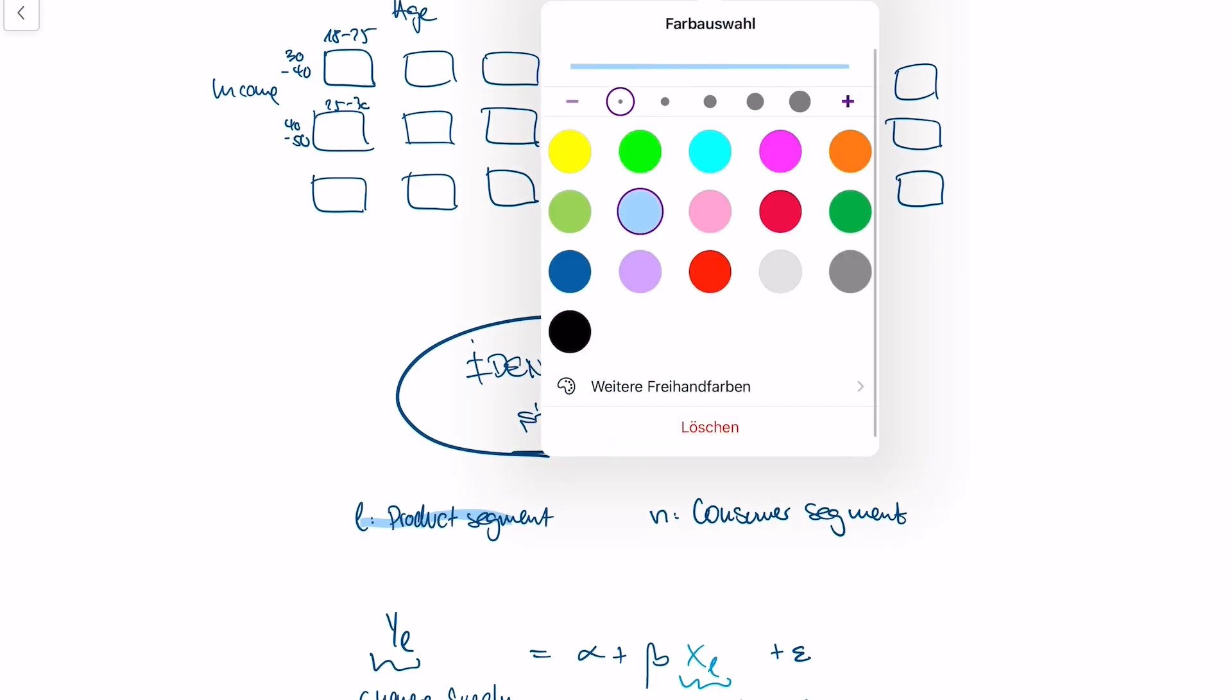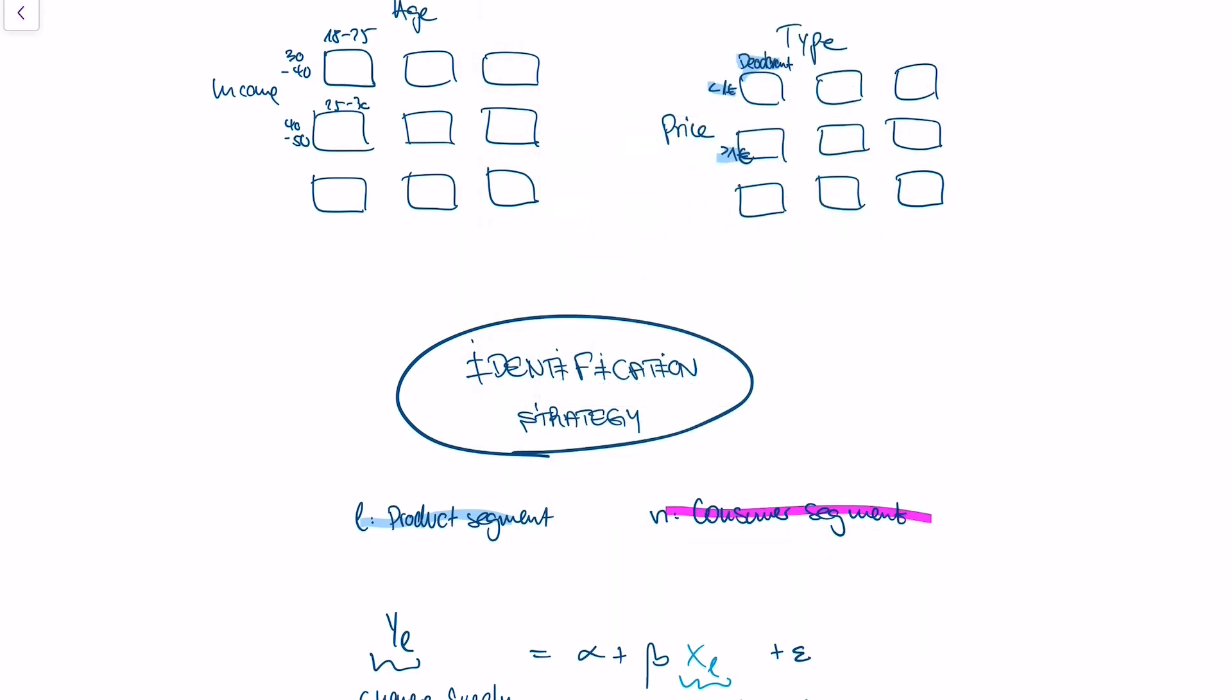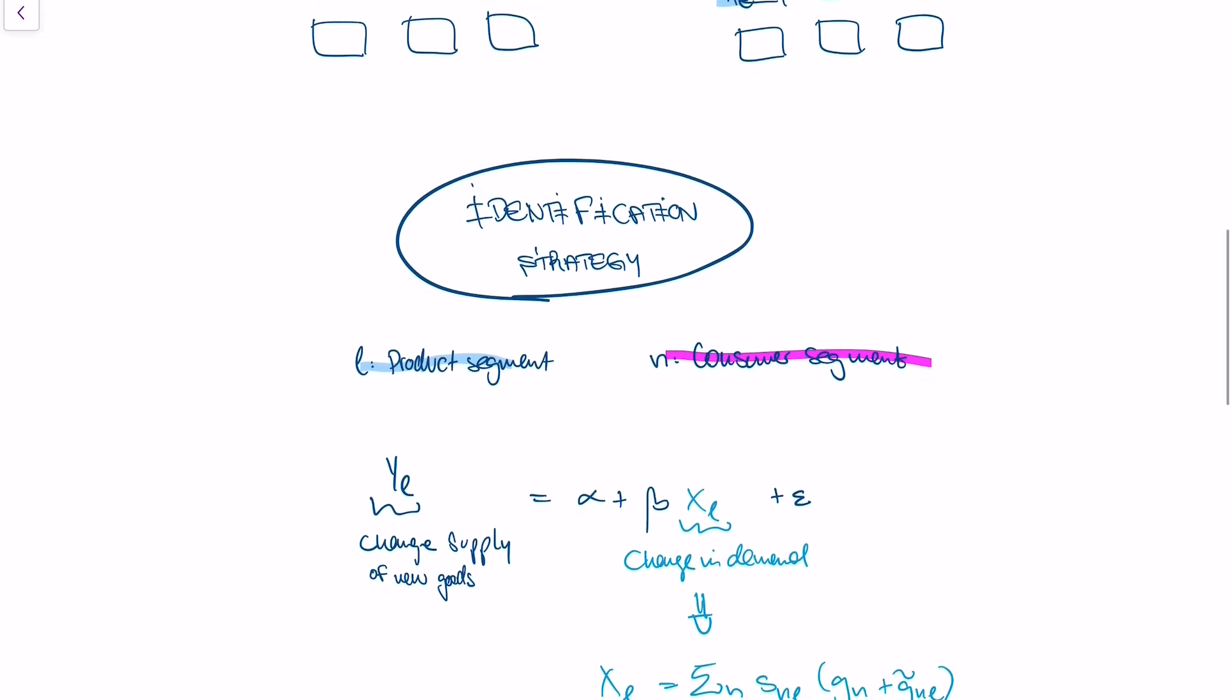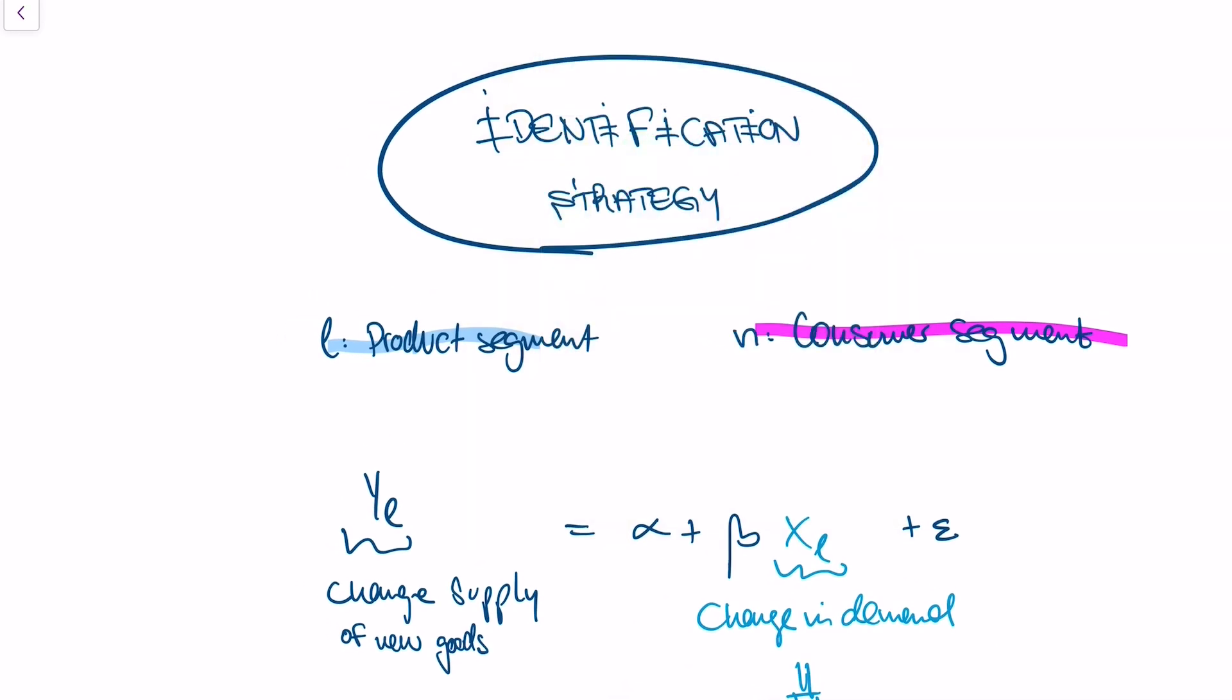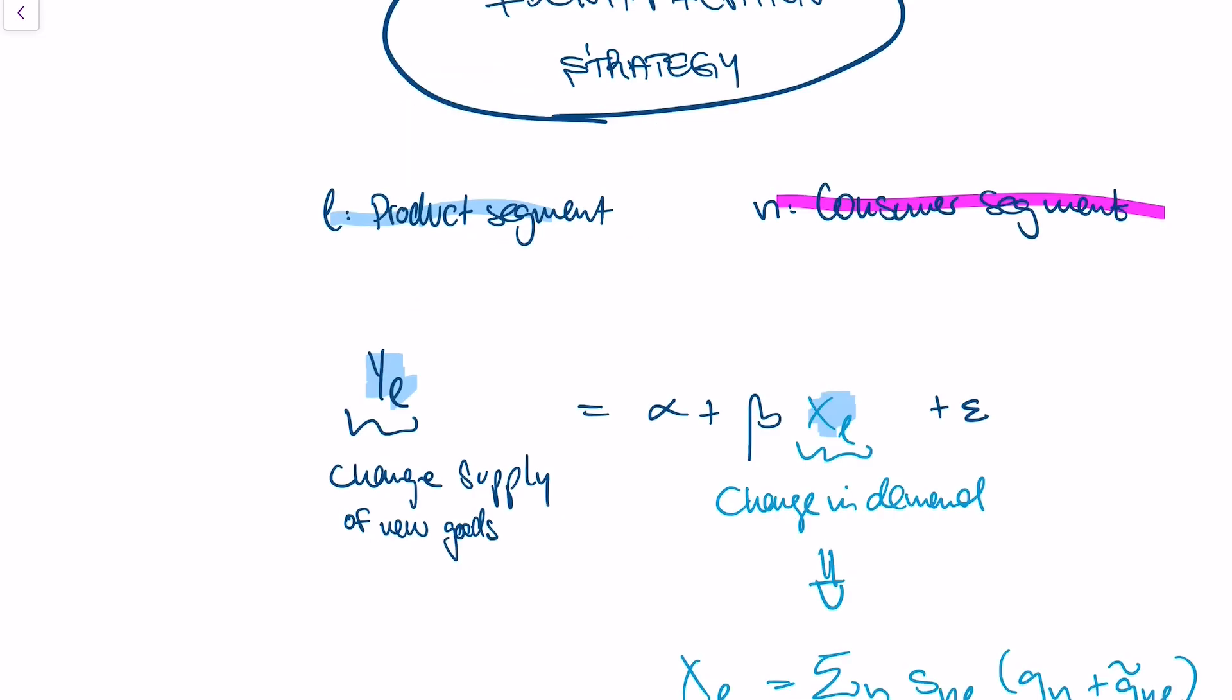And we have different consumer segments - our rich consumers in the age bracket of 25 to 30 and our poor consumers. And what we now want to understand is how supply changes, or how the supply of new goods changes driven by changes in demand. So what would that be? That could be a very effective deodorant which is driven by very strong demand in deodorants.